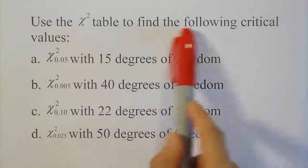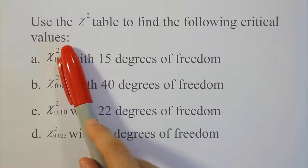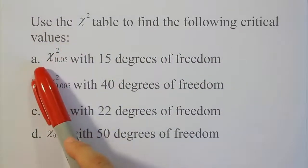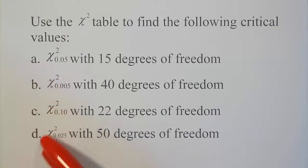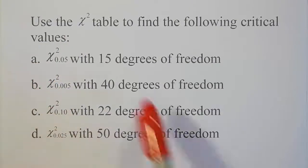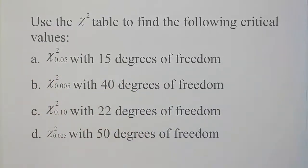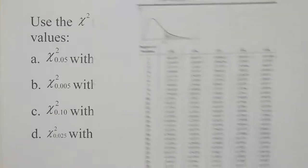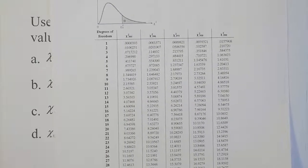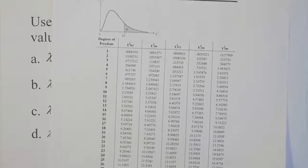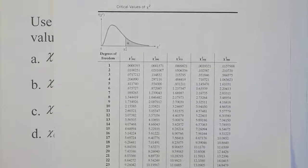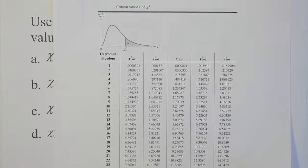Use the chi-squared table to find the following critical values. We have four parts, and we're going to work out each of these using our table. The chi-squared table looks like this — we'll be discussing it and showing how it's used when we solve these four pieces A, B, C, D.